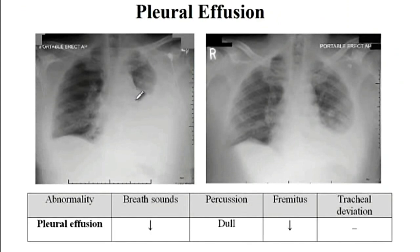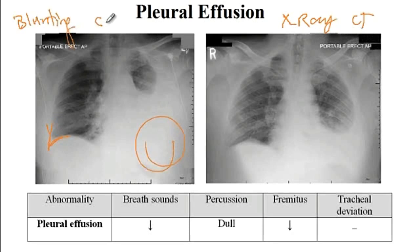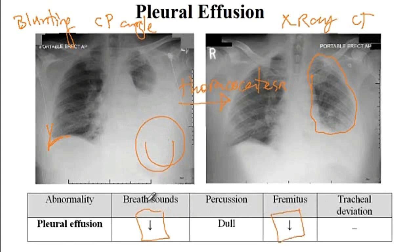Pleural effusion can be diagnosed with chest X-ray or CT. You will see blunting of the costophrenic angle — one characteristic feature of pleural effusion is blunting of the costophrenic angle. Comparing before and after thoracocentesis images from the same patient, after removing fluid, some space opens up. With pleural effusion, since fluid blocks transmission of breath sounds and vibrations, there are decreased breath sounds and decreased fremitus, and percussion produces a dull sound.